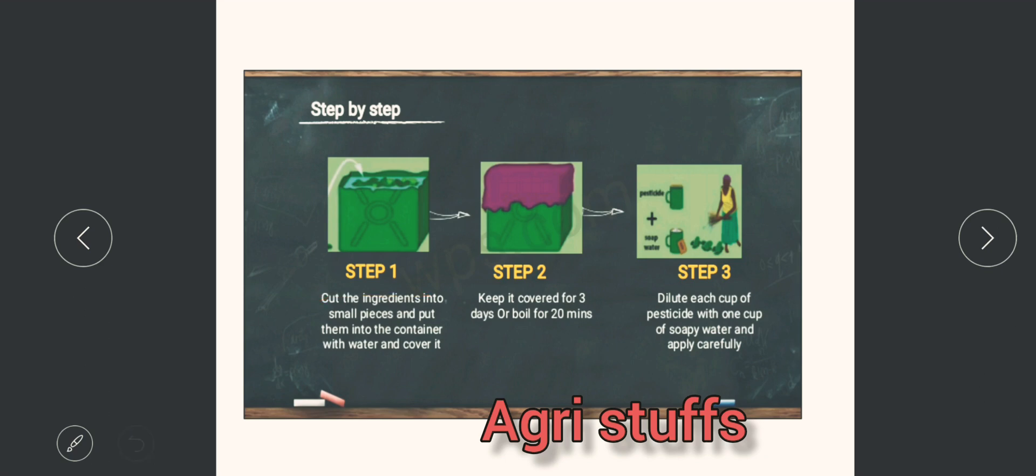Then step 2 is keep it covered for 3 days or boil for 20 minutes. Then moving on to step 3, dilute each cup of pesticides with a cup of soapy water and apply very carefully to the crop.